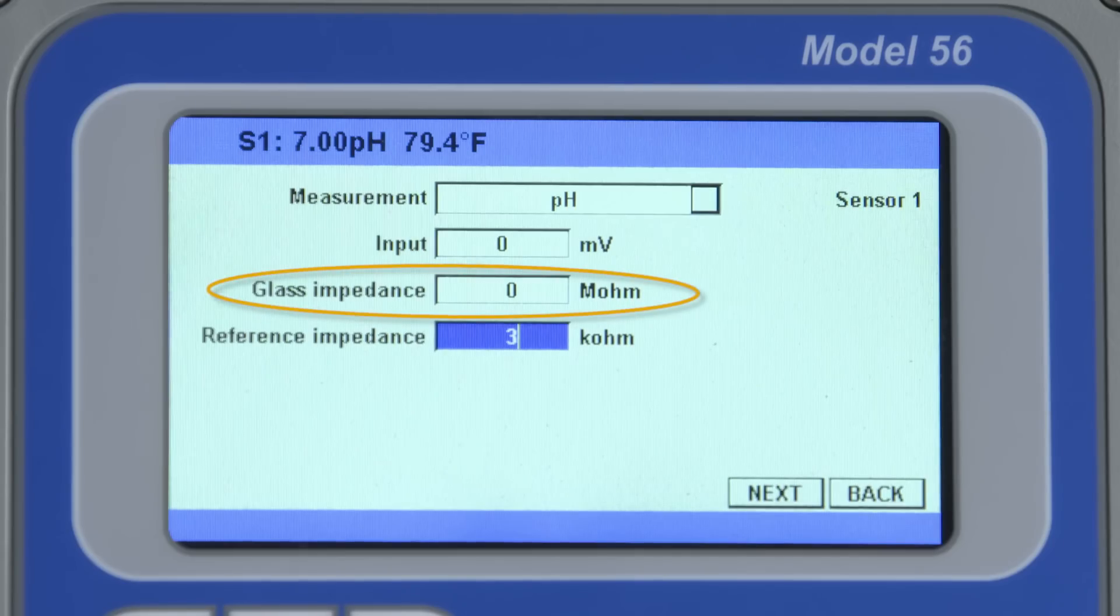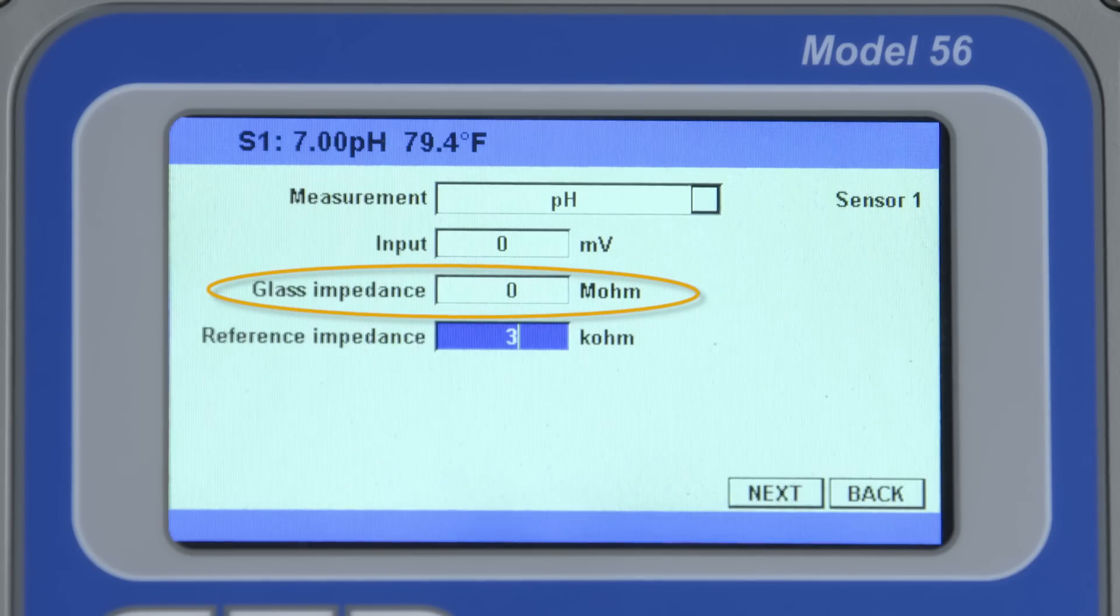That lets you know that the sensor either needs to be cleaned or resubmerged into the process fluid. A low, near zero glass impedance indicates that there is a crack in the glass bulb.